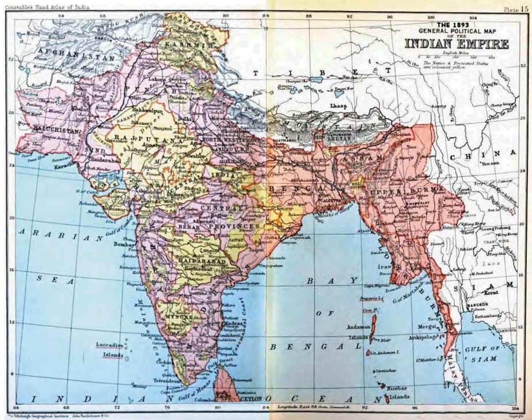Between 1612 and 1757, the East India Company set up factories in several locations, mostly in coastal India, with the consent of the Mughal emperors or local rulers. Its rivals were the merchant trading companies of Portugal, Denmark, Holland and France. By the mid-18th century, three presidency towns — Madras, Bombay and Calcutta — had grown in size.